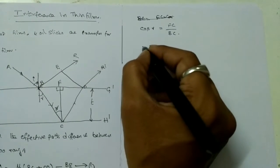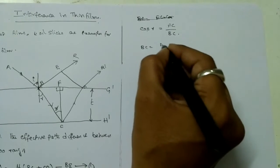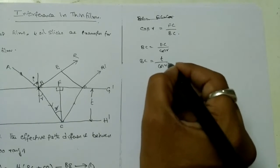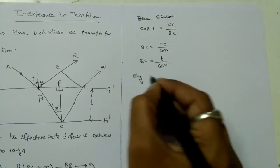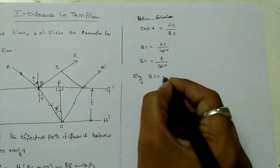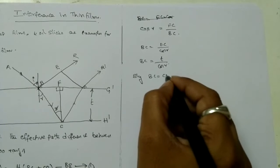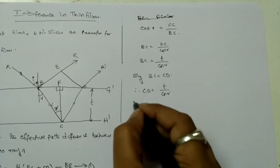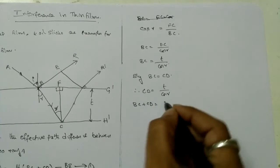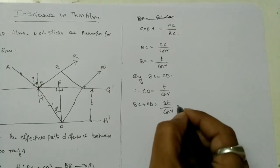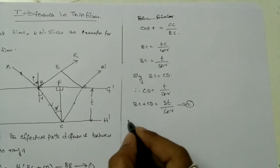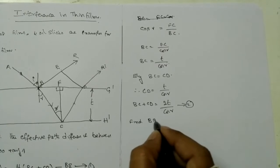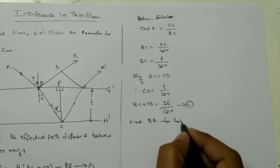Using cosine: cos R = FC/BC, so BC = t/cos R. Similarly, BC = CD, therefore CD = t/cos R. Thus BC + CD = 2t/cos R. This is equation number 2.